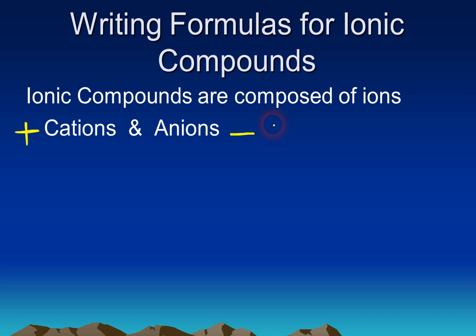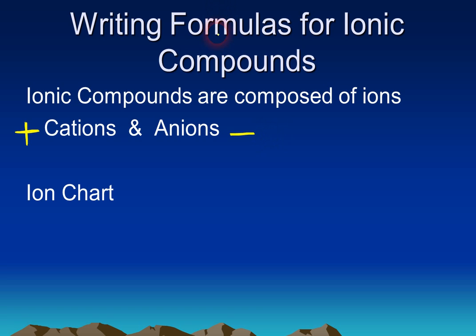That's an extremely powerful force and that's why ionic compounds tend to have very high melting points and they're usually solids, because they have that very strong force between them. On your handout titled 'Common Ions and Their Formulas,' you'll notice that on the left side we have cations and on the right side we have anions. Every time we have an ionic compound there's going to be a cation written first and then an anion written second.